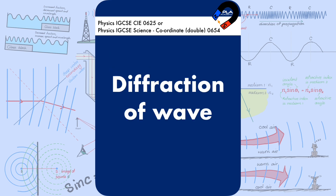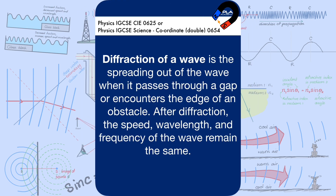Diffraction of a wave is the spreading out of the wave when it passes through a gap or encounters the edge of an obstacle. After diffraction, the speed, wavelength, and frequency of the wave remain the same.